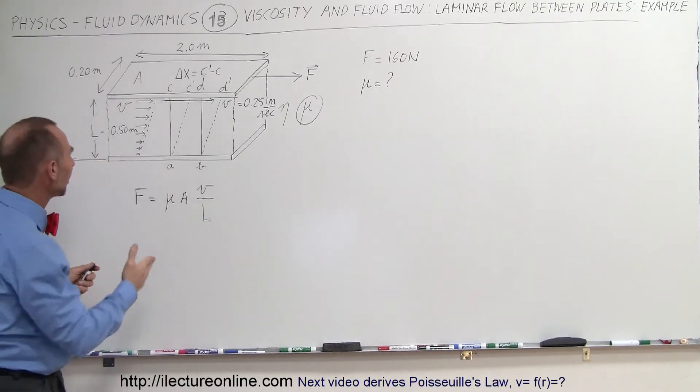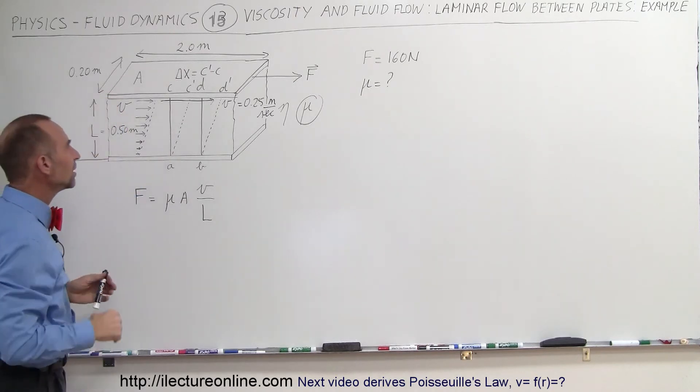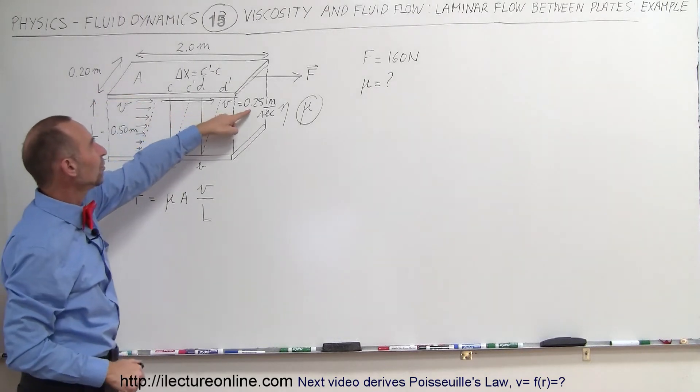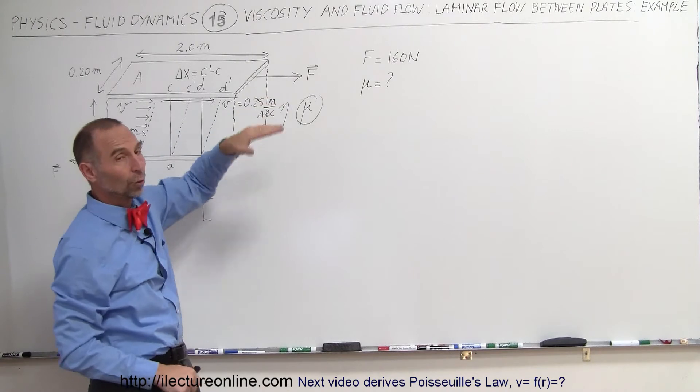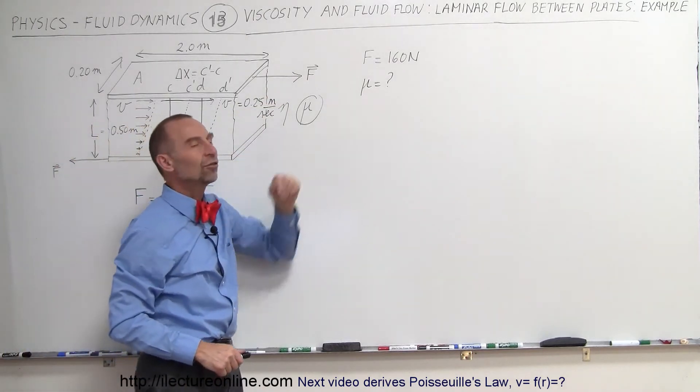The height of the fluid is 0.5 meters, and the fluid at the top moves at 0.25 meters per second, which is also the velocity of the plate at the top. The question then is: what is the coefficient of viscosity of this fluid?